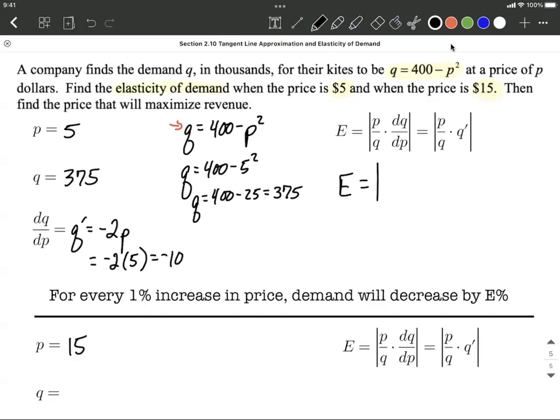From here, the elasticity of demand is the price 5 over the quantity 375 multiplied by the derivative of the demand function evaluated at 5, which we said was negative 10. So that's going to be negative 50 over 375, which works out to be about 0.13. It's important that we note that it's less than 1, because that's the magic number. If the elasticity of demand is less than 1, we call that inelastic.